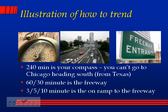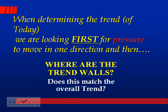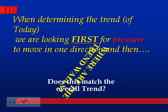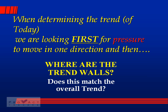That entry gets me into a trade at a time compression low enough to trade with a reasonable stop. When determining the trend of today, look first for pressure to move in one direction or the other, and then where are the trend walls. If it's going up but headed directly into a trend wall, do you really want to make that trade? And does this match the overall trend? If the overall trend is up and I'm going up, my trade is statistically more probable to succeed.